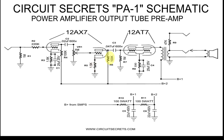R6 is the plate resistor for the second plate in the 12AX7. C3 is the coupling capacitor for stage 2. Notice it is a much higher value than the first coupling capacitor — I chose this value to allow more bass tones to reach the power amplifier. R7 is the grid leak resistor for the 12AX7. R8 is the cathode resistor for the 12AX7. C4 is the cathode bypass capacitor; it is of a typical value.